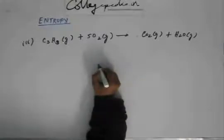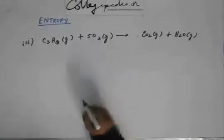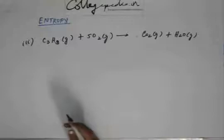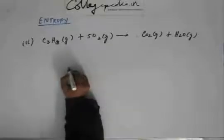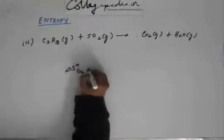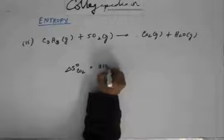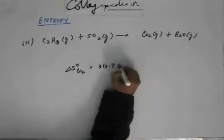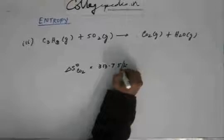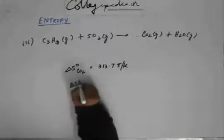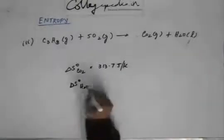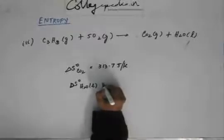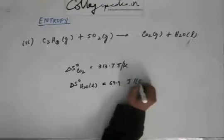Don't shy away from calculation because in physical chemistry, in most of the reaction, in this chapter and other chapters, you have to deal with calculations. It's not like organic, so you have to get to your answer and do calculation. I am giving you data of delta S not of CO2 is equal to 313.7 joule per kelvin. Delta S not for H2O, suppose this is not in gaseous state, let's take this in liquid state. Delta S not of H2O liquid is equal to 69.9 joule per kelvin.